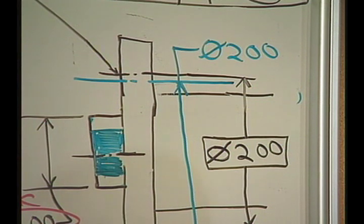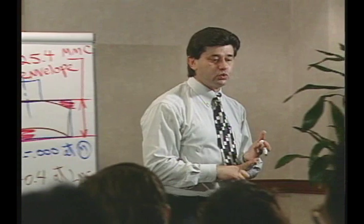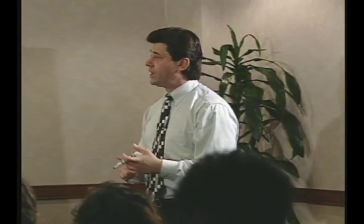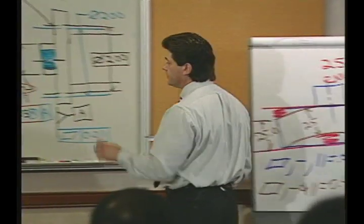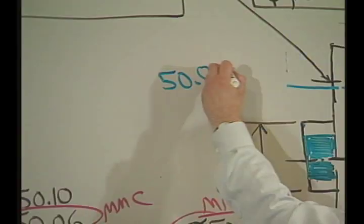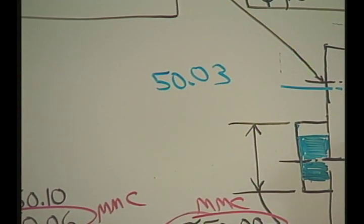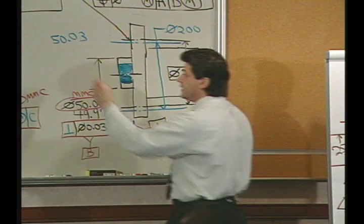Now, how much could it shift down? Well, it could shift down potentially by the difference between the virtual condition of B and the least material condition of B. You told me before that the virtual condition of B was 50.03, 50 plus 0.03. We know the least material condition of B is 49.97.